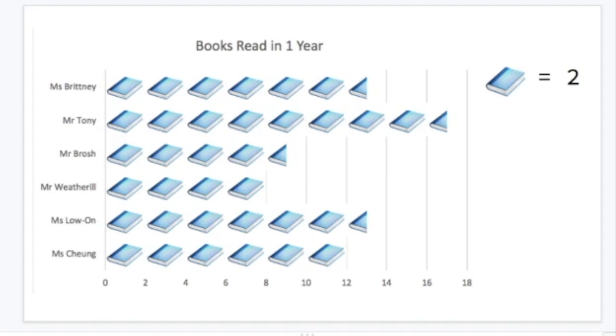If you go down to the numbers at the bottom of the page and look directly underneath that half a book of Mr Brosh's, you would see that it lines up halfway between 8 and 10. And of course the number that would go there would also be 9.